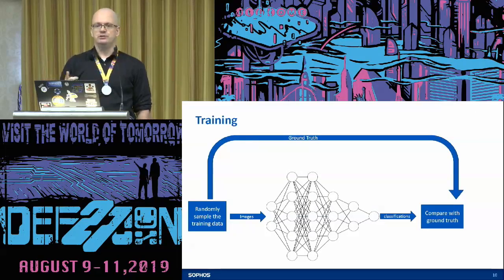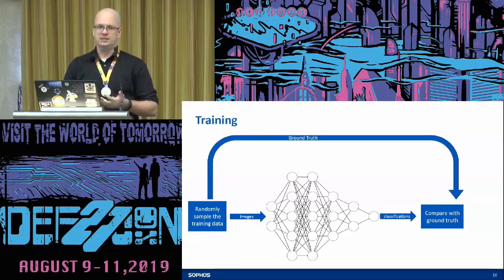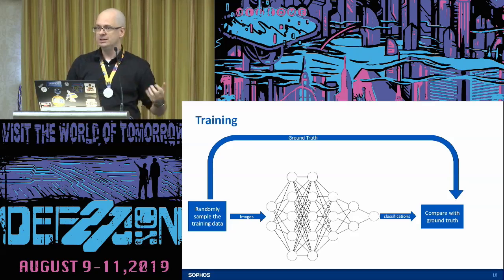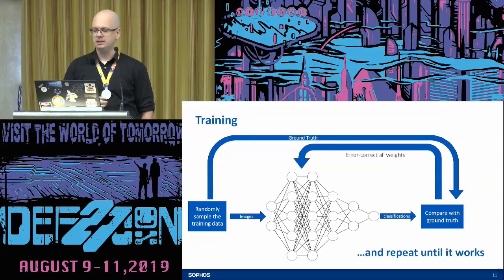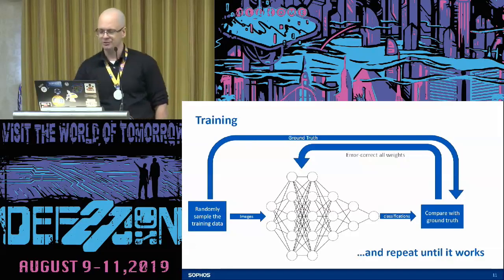How do you train it? You randomly sample the data, feed an image through a randomly initialized network, and get a classification out. When you start, that classification is going to be terrible — it'll tell you a picture of a car is equally likely to be a car, a horse, a dog, or a bird. That's fine, because you take that mistake and tell it how to fix it. You error-correct all of the weights. This usually takes the form of backpropagation. You just do this until it works.